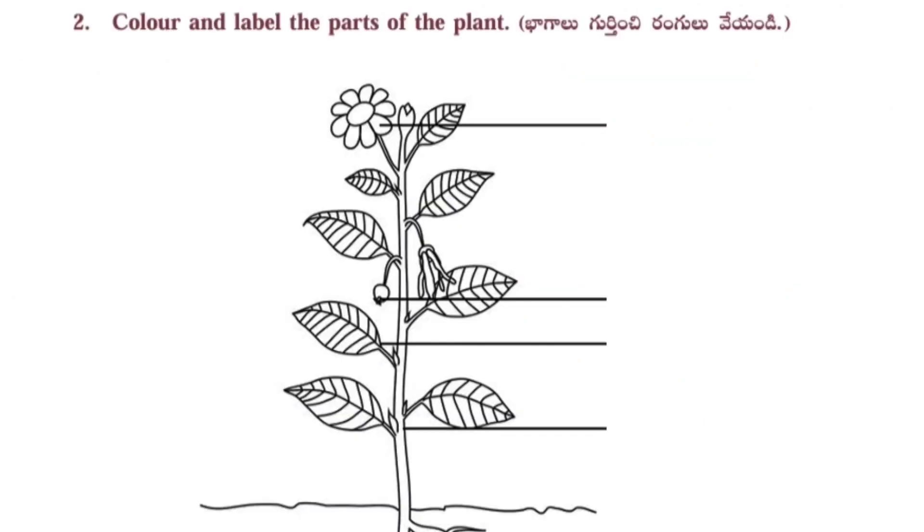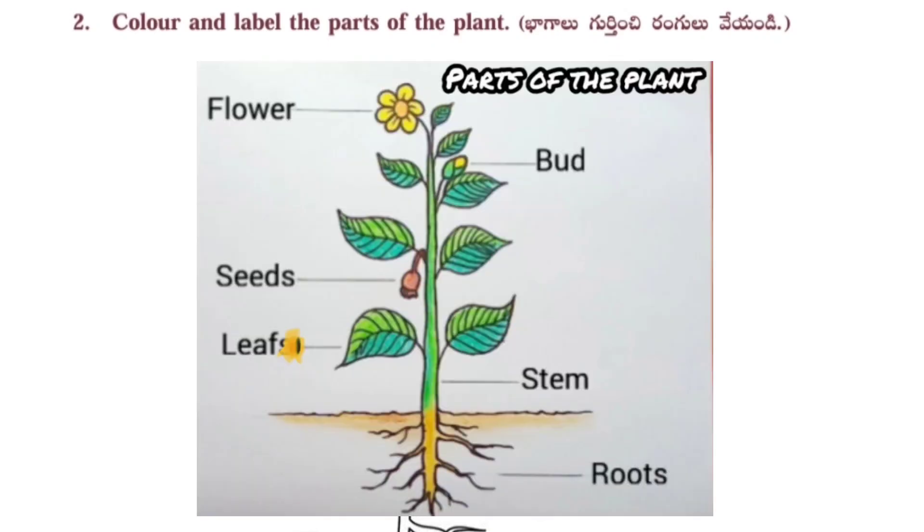Second one: Color and label the parts of the plant. Here a student has to color the plant and label parts of a plant.